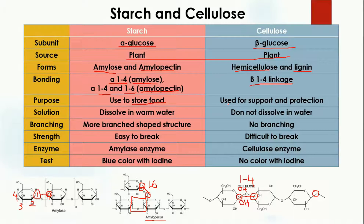Starch is used to store excessive glucose, while cellulose is used for support and protection, as it is present in the cell walls which protect the organelles and the structure of the plant cell.